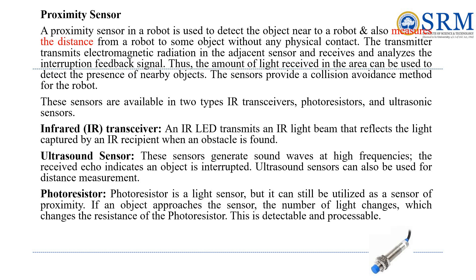The second type is ultrasound sensors — they emit high-frequency sound waves and detect objects by analyzing the echoes, and can also measure distances. The third type is the photo resistor: although primarily a light sensor, a photo resistor can sense proximity — when an object gets close, the amount of light changes, which alters the photo resistor's resistance and the robot can detect this change.